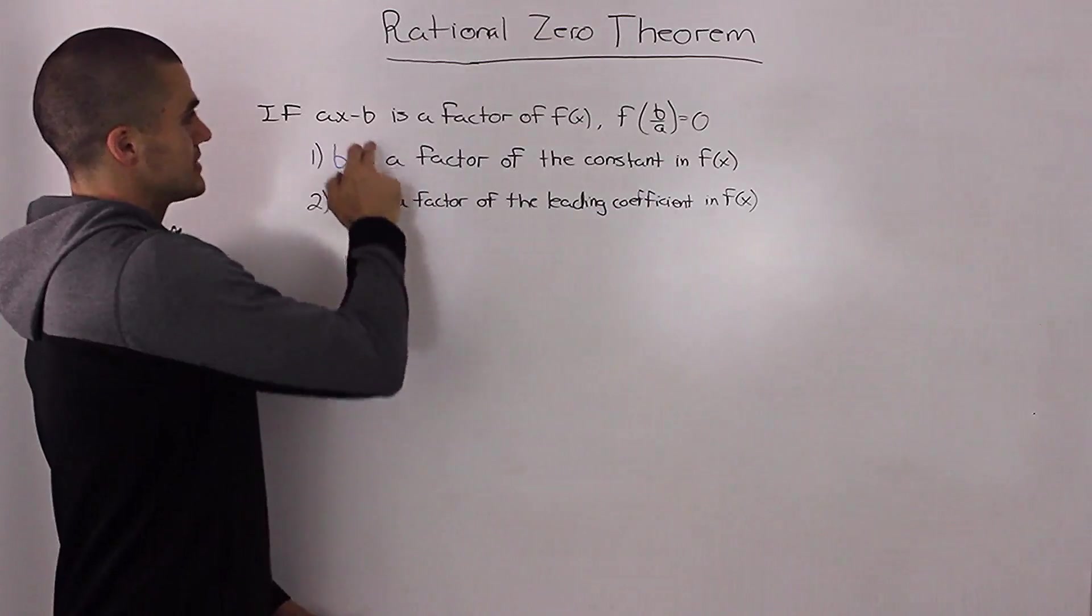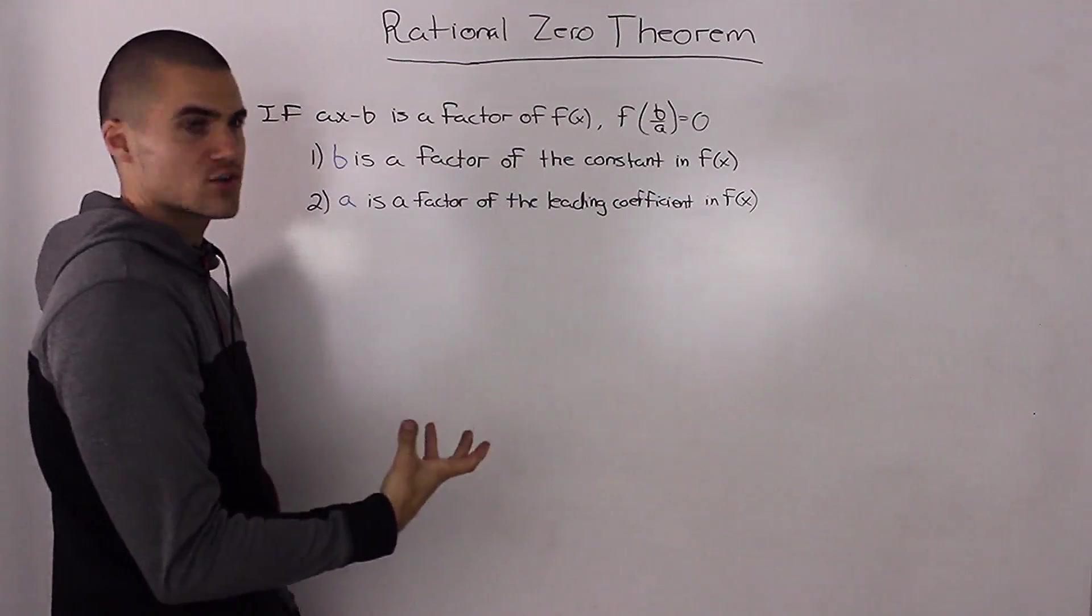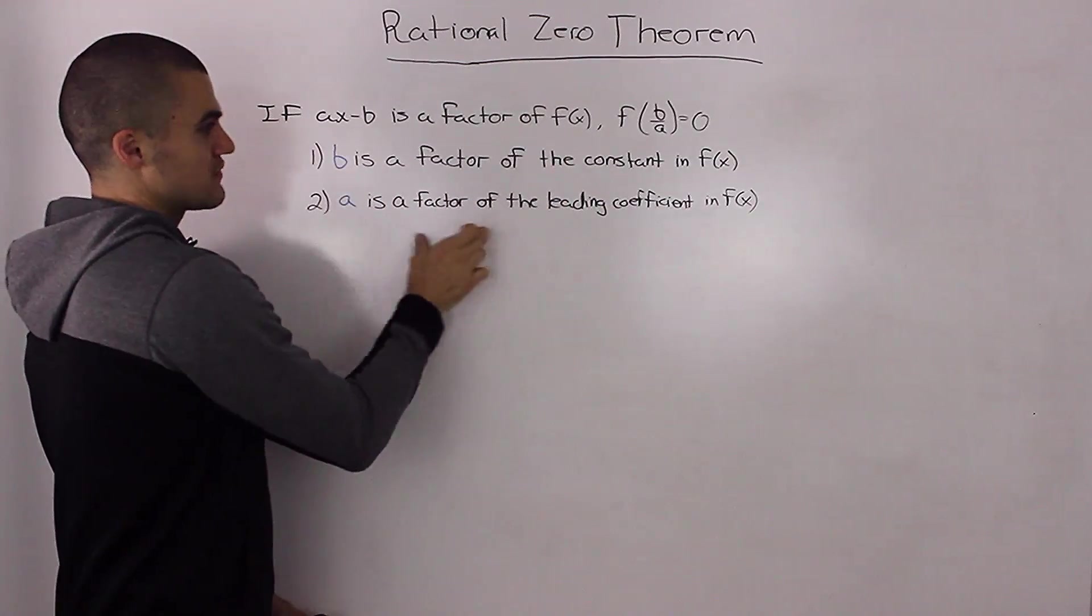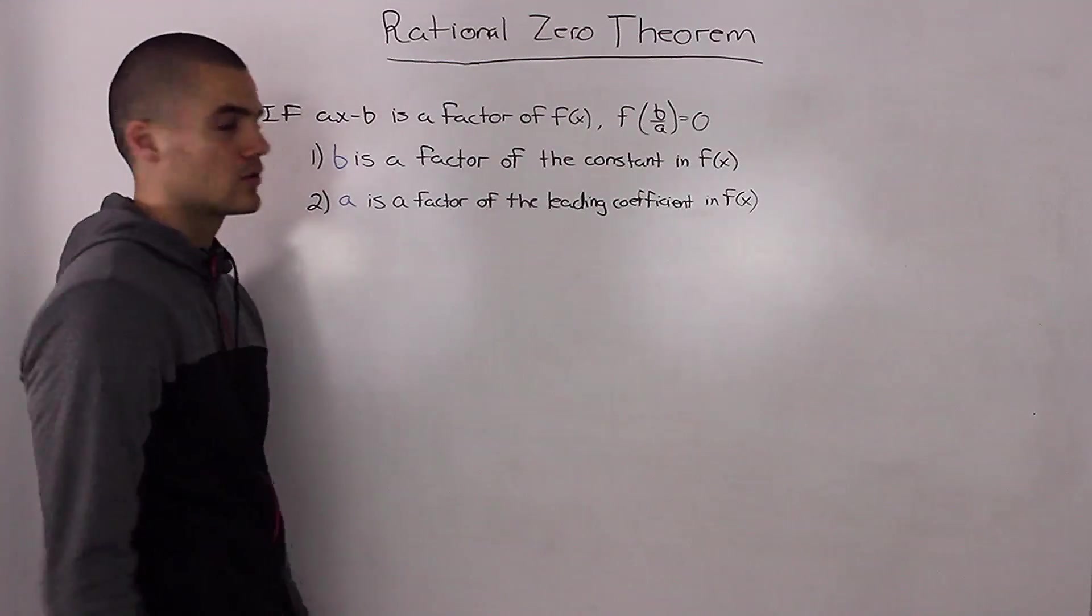All that means is that this b value here is a factor of the constant term in f(x), and the a value is a factor of the leading coefficient in the polynomial f(x).